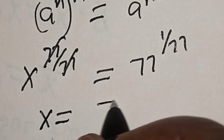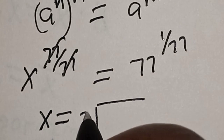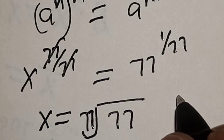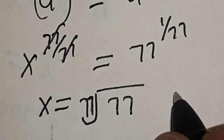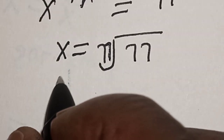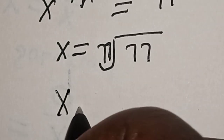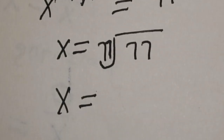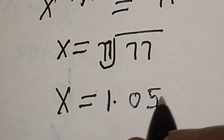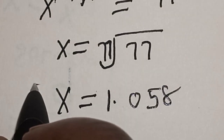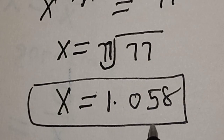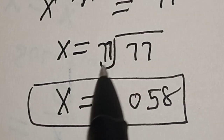Therefore x is equal to the 77th root of 77. If you press your calculator, x is equal to 1.058. That is our final answer. If you enjoyed the class, please don't forget to like, share, comment, and subscribe.